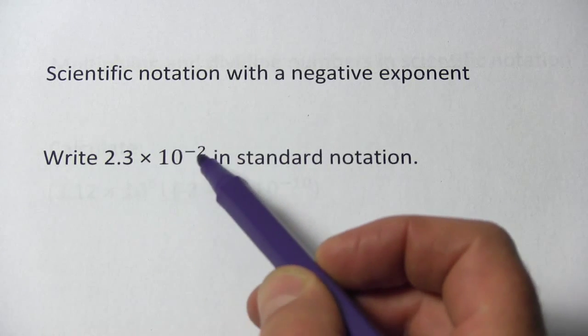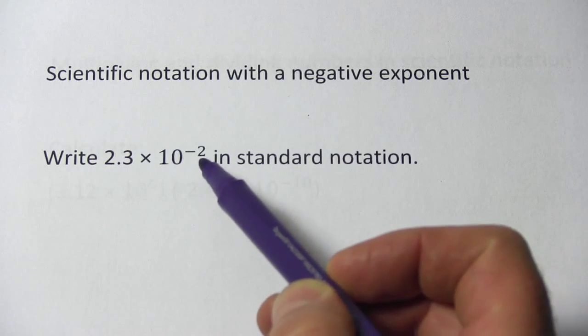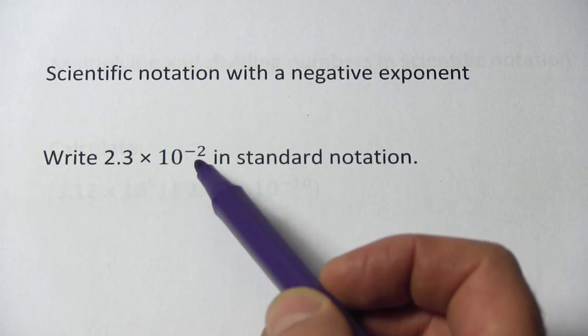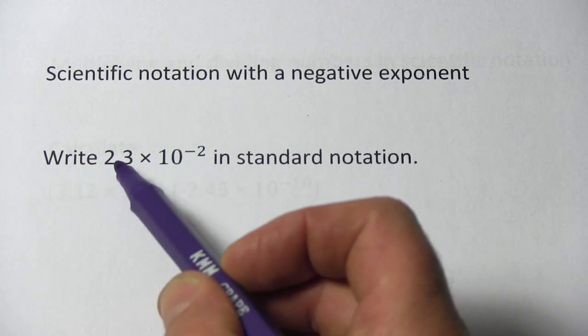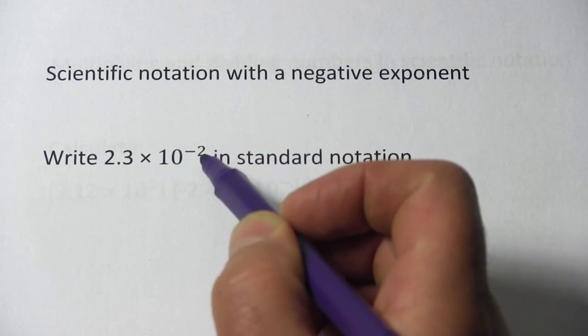When you have scientific notation with a positive exponent, you just move the decimal point to the right as many places as the power is. When you have scientific notation with a negative exponent and you want to put it back into standard notation, you simply do the opposite. You move the decimal point to the left that number of spaces.